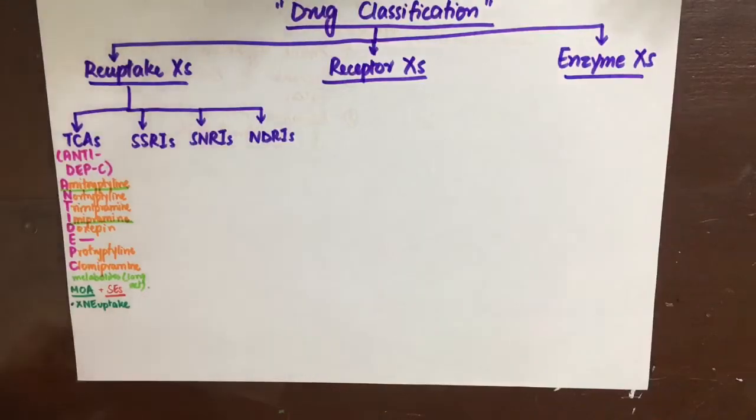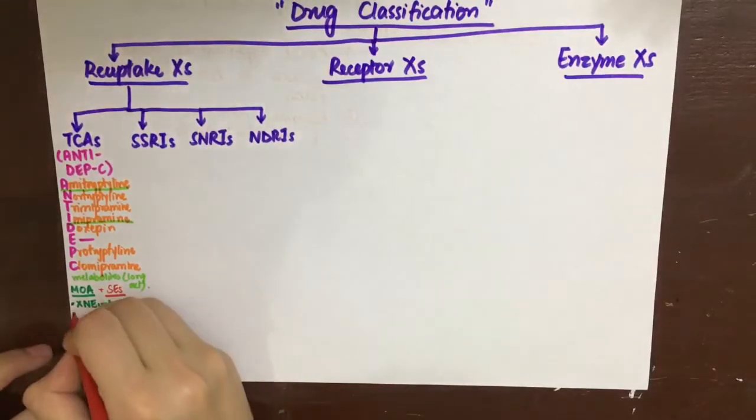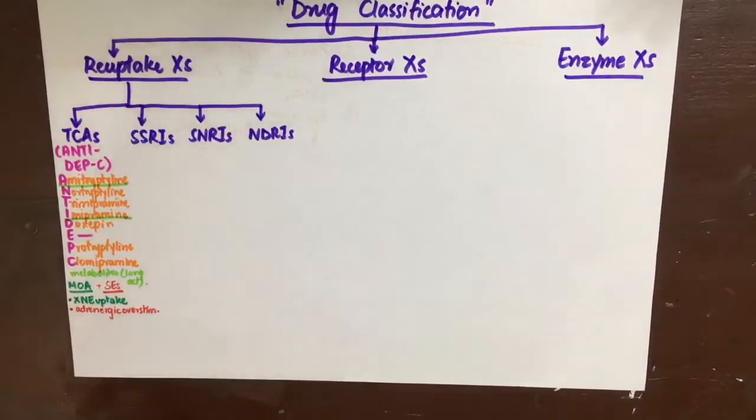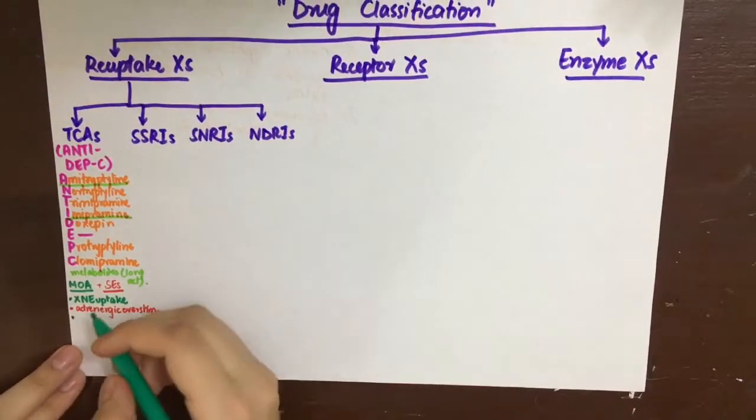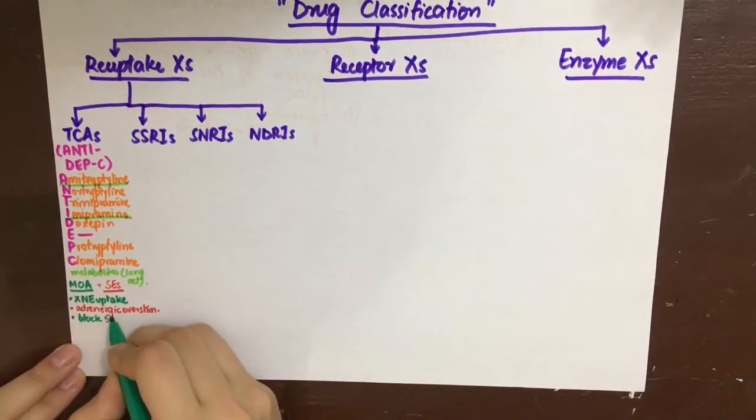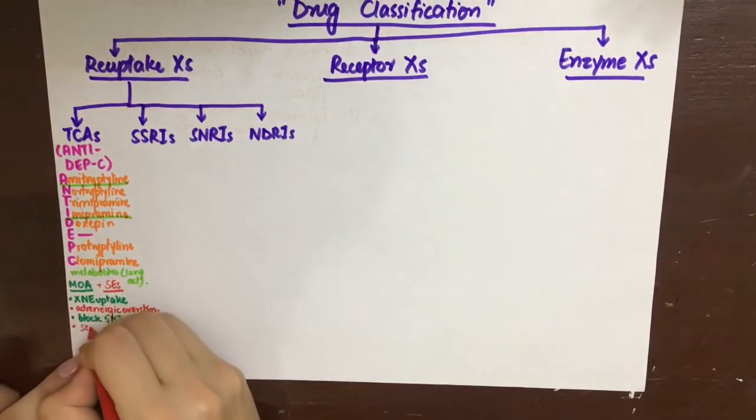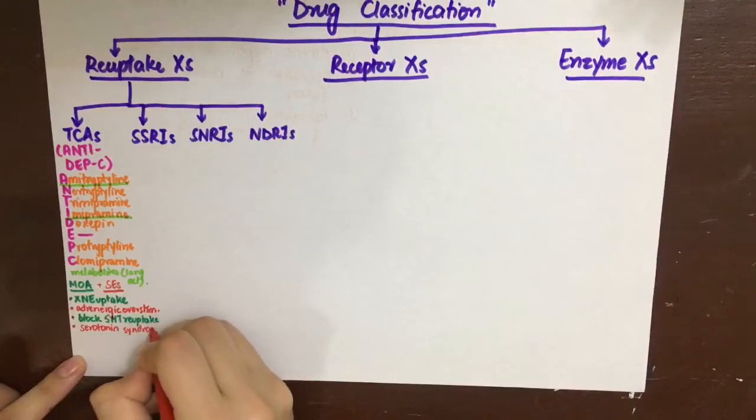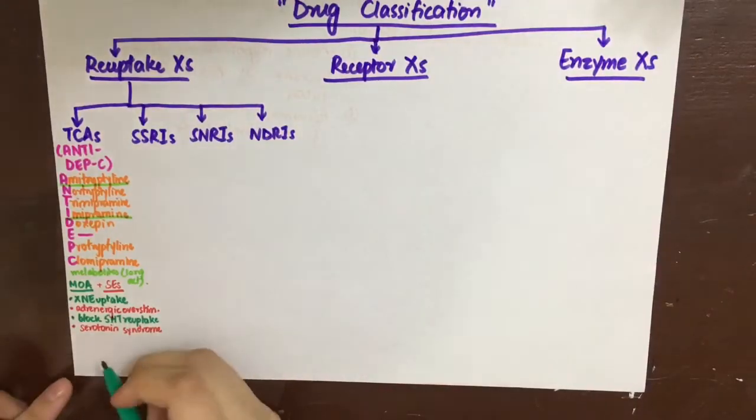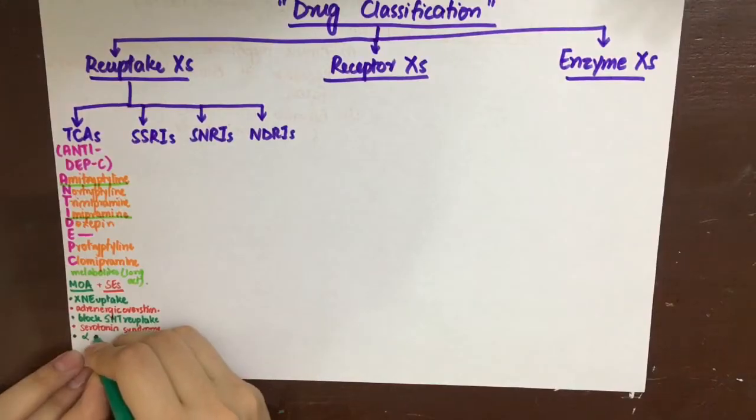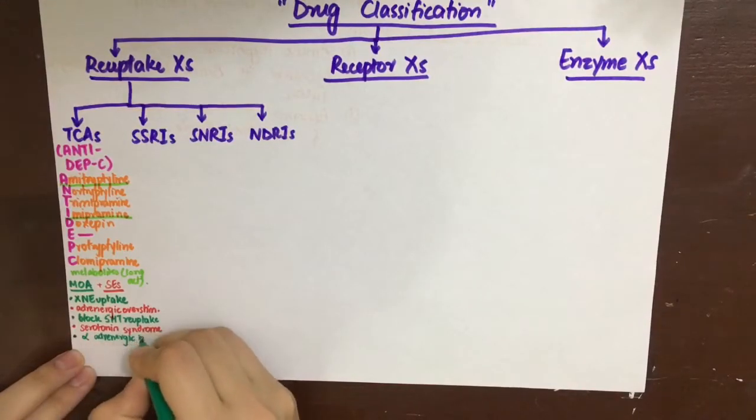The second action was to block serotonin reuptake and this can cause serotonin syndrome. Serotonin syndrome occurs when tricyclic antidepressants are used with SSRIs or MAO inhibitors leading to increased serotonin levels in the synapses and leading to severe symptoms like sweating, rigidity, myoclonus, hyperthermia, instability, and seizures.